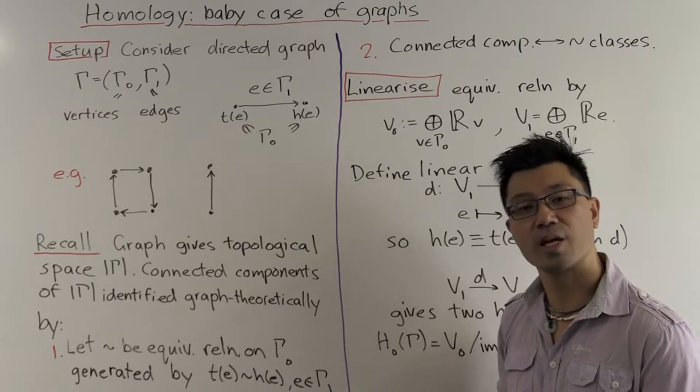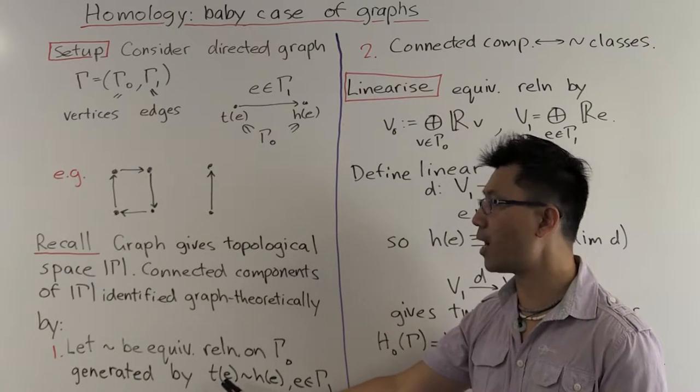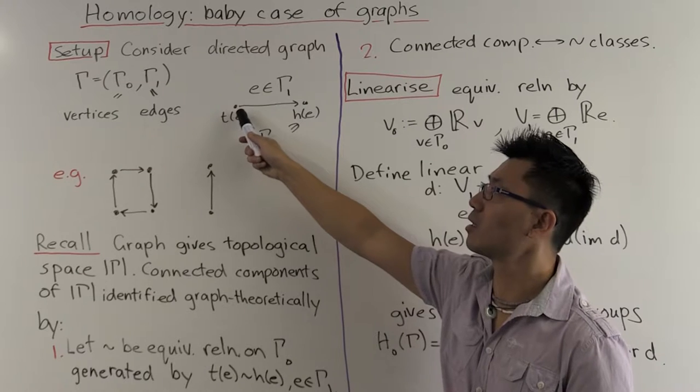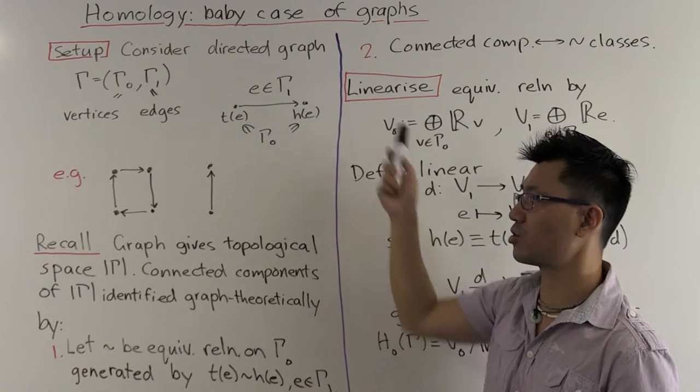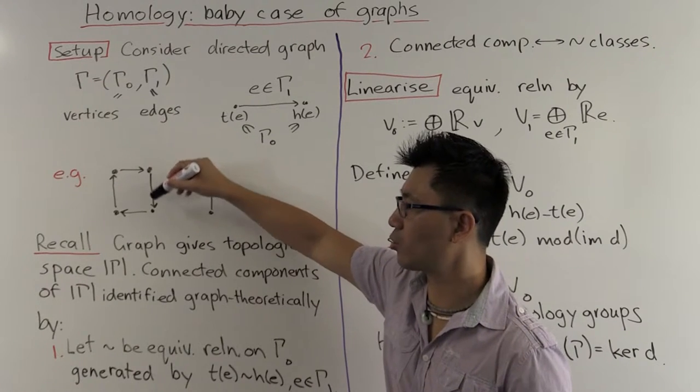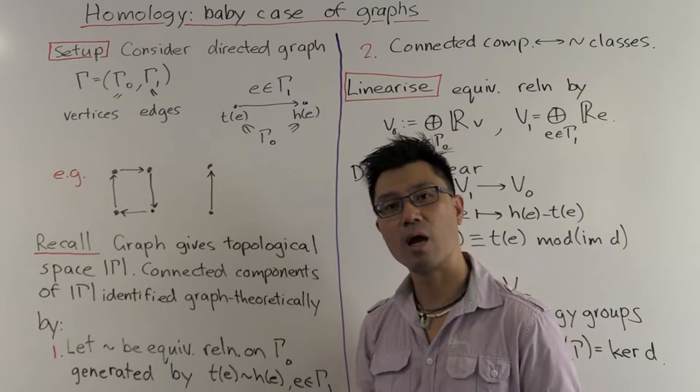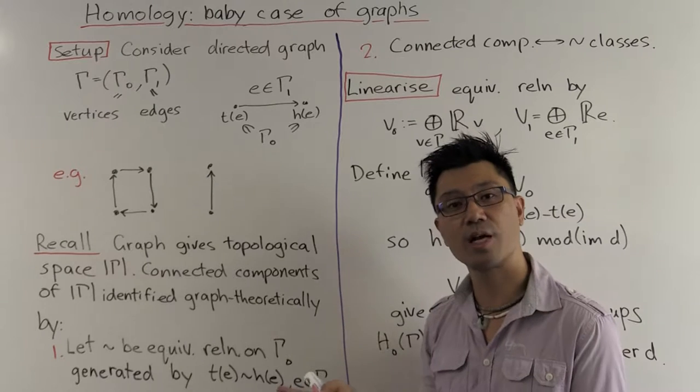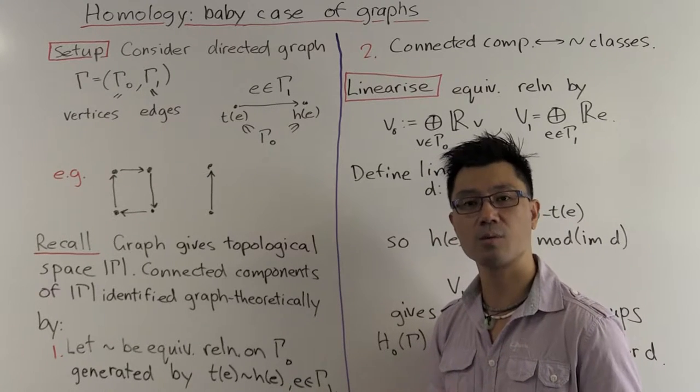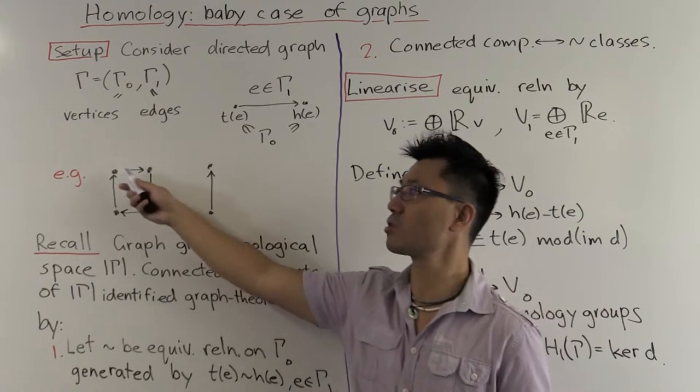What we do is we're going to put an equivalence relation on the set of vertices. The equivalence relation is going to be generated by the tail of an edge is equivalent to the head of an edge. So in other words, this vertex is equivalent to this one. And to generate an equivalence relation, we just have to make sure that we enforce reflexivity, symmetry, and transitivity.